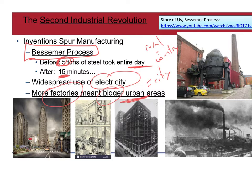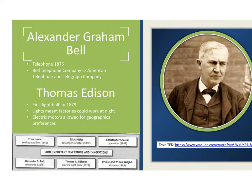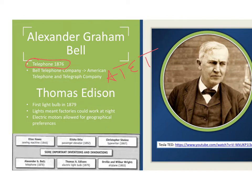Alexander Graham Bell is well known for the telephone, which was really a more complex version of the telegraph. But it created instant person-to-person communication — anyone could speak into it and listen, unlike the telegraph which required someone to translate Morse code. Bell's telephone company eventually became the American Telephone and Telegraph Company, known today as AT&T.